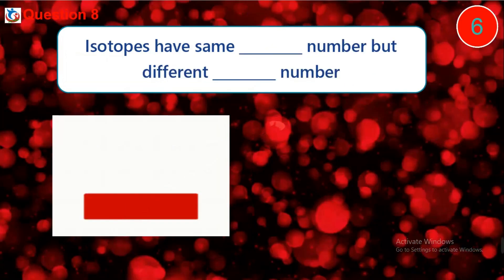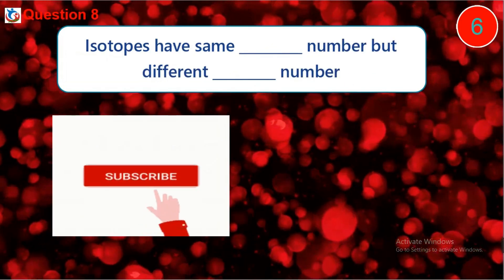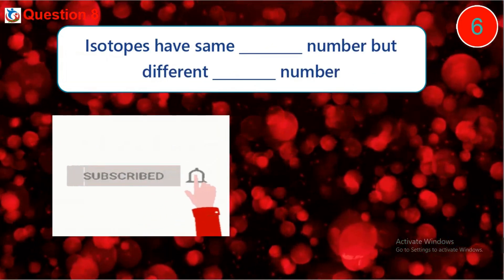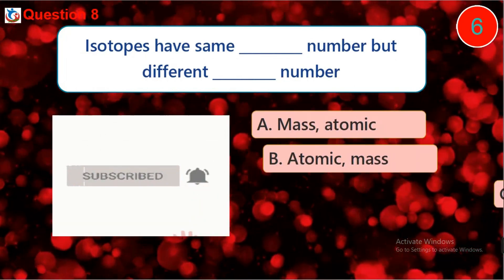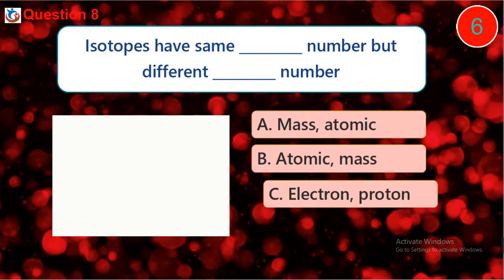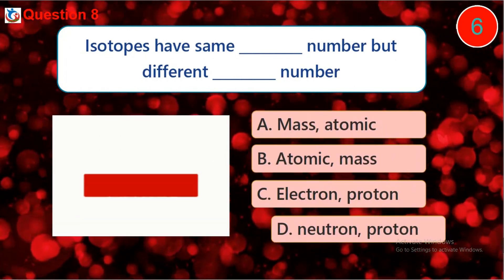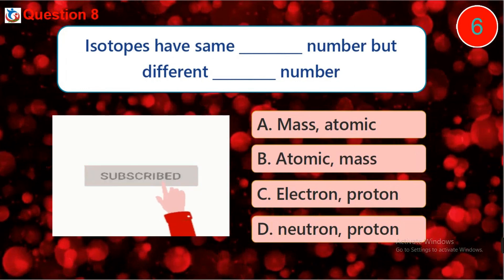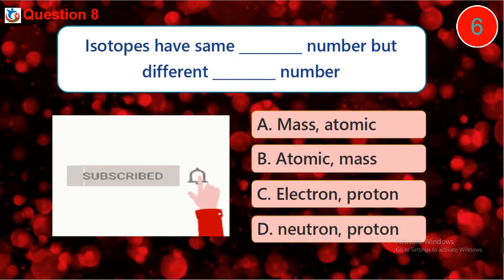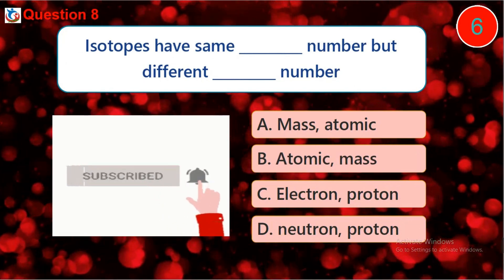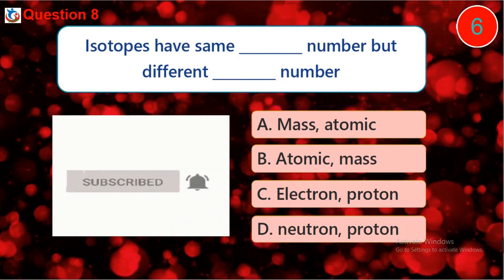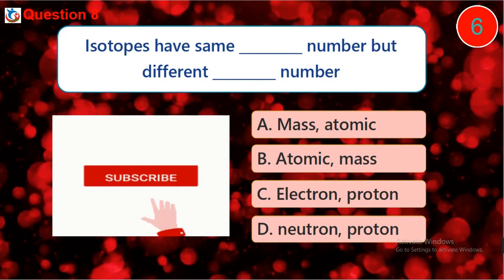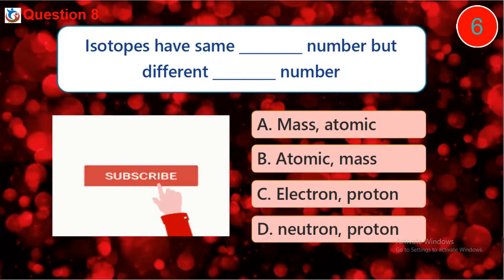Question eight: isotopes have same dash number but different dash number. A. mass, atomic, B. atomic, mass, C. electron, proton, D. neutron, proton.